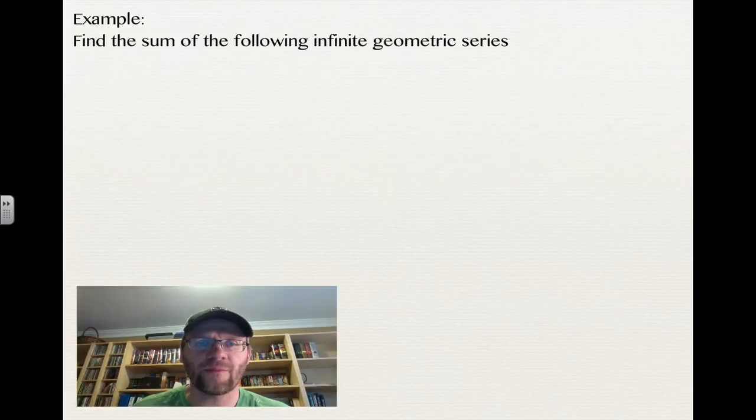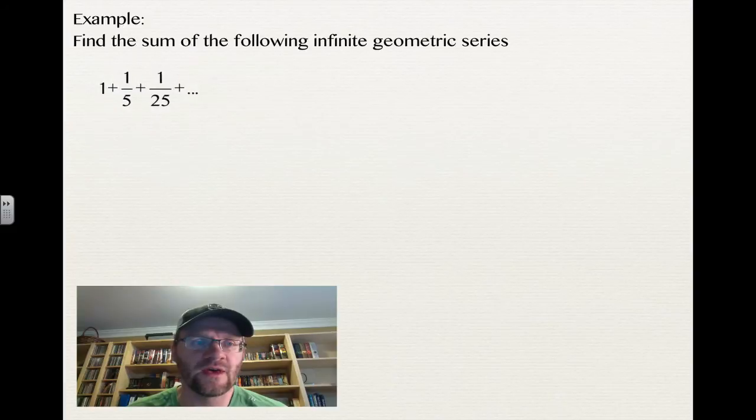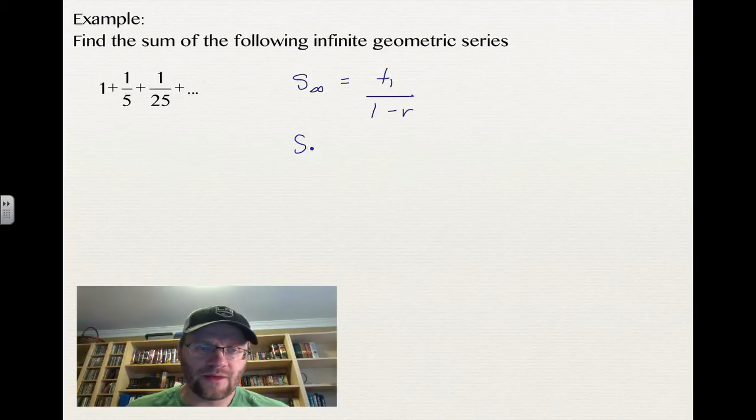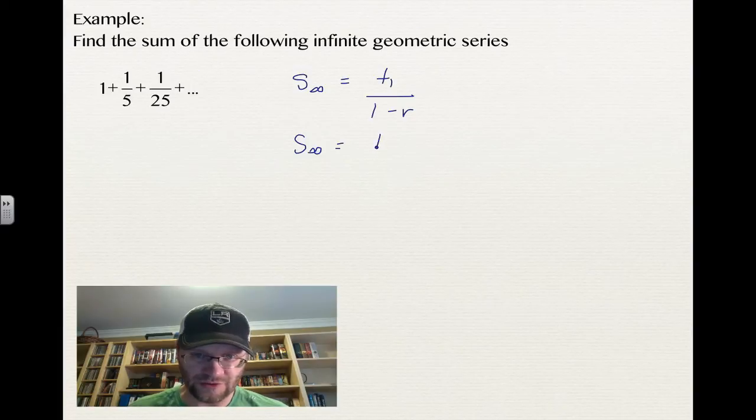Here's our example. Find the sum of the following infinite geometric series: 1 plus 1 fifth plus 1 over 25 plus dot dot dot. We're going to use our s infinity formula, which is t1 over 1 minus r. That means the sum of this infinite series is our first term, which is 1, over 1 minus the common ratio.